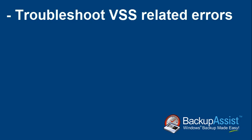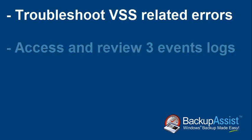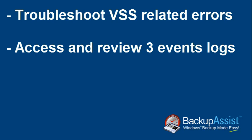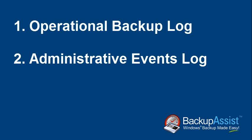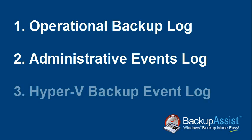Specifically, we will show you how to access and view three event logs that help you identify where the VSS related backup errors are occurring. These are: one, the operational backup log; two, the administrative events log; three, the Hyper-V backup event log.